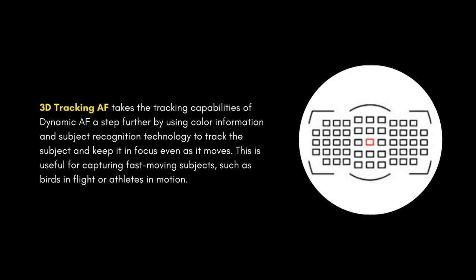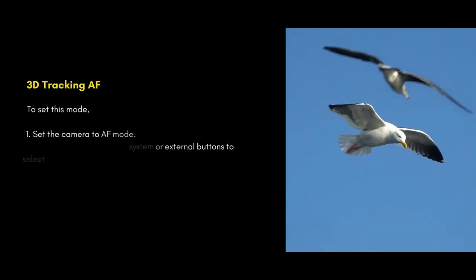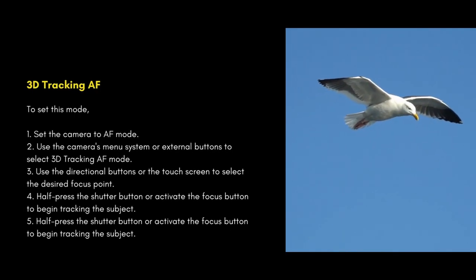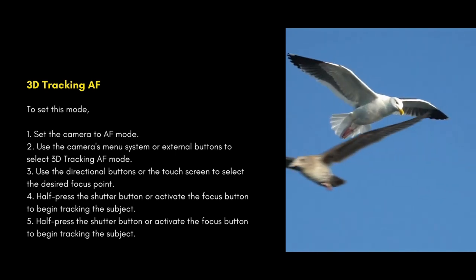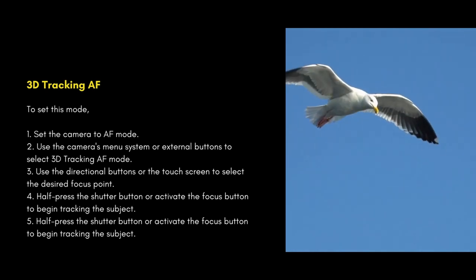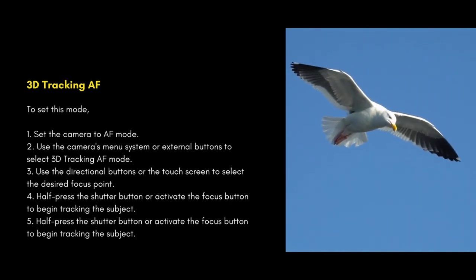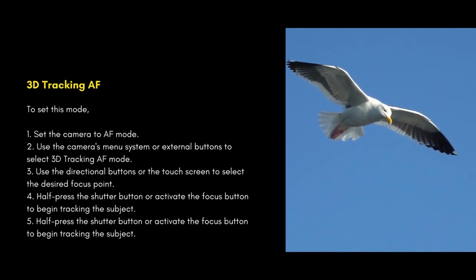3D tracking AF takes the tracking capabilities of dynamic AF a step further by using color information and subject recognition technology to track the subject and keep it in focus even as it moves. This is useful for capturing fast-moving subjects such as birds in flight or athletes in motion. To set this mode, set the camera to AF mode and use the camera's menu system or external buttons to select 3D tracking AF mode.